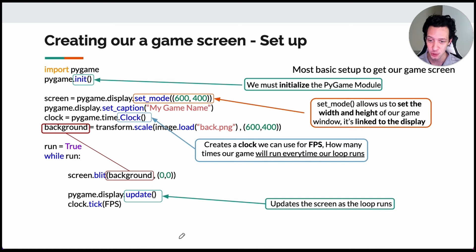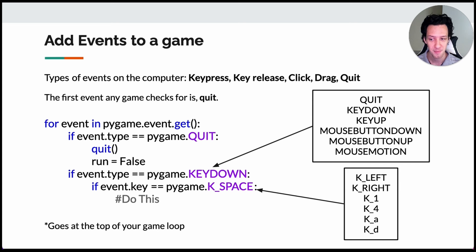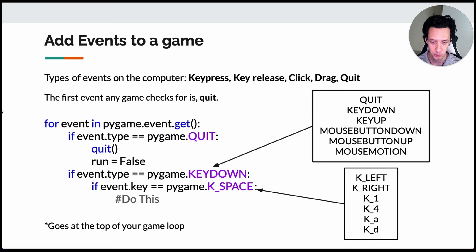Before we jump into creating a short program to test Pygame, let's talk about events. There are many different types of events on the computer: key press, key release, click, drag, quit. Any game you're playing — Xbox, computer, phone — the first thing the game checks for is whether the player has quit. That will also be the first event in our games.